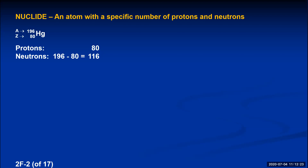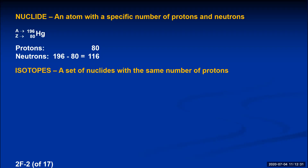If you have a series of nuclides that all have the same number of protons, we call that group of nuclides isotopes — a set of nuclides with the same number of protons. These two nuclides of mercury have the same atomic number but different mass numbers, meaning they have different numbers of neutrons. So this is a set of nuclides with the same protons but different neutrons — they are isotopes.